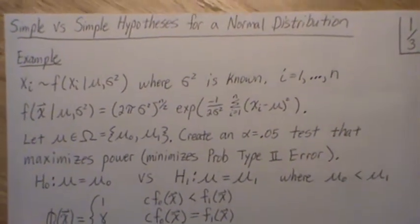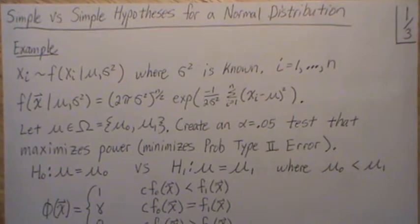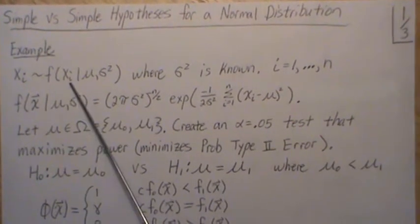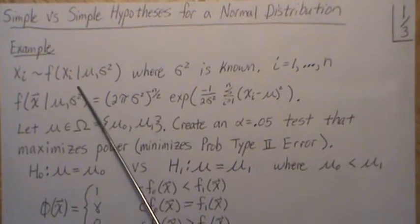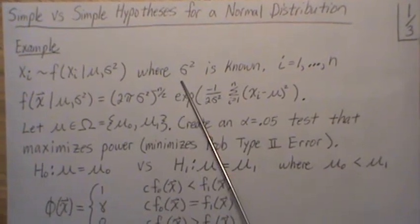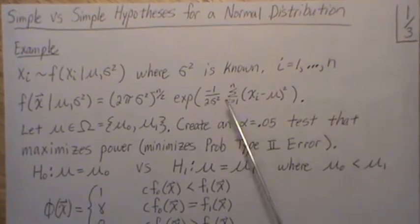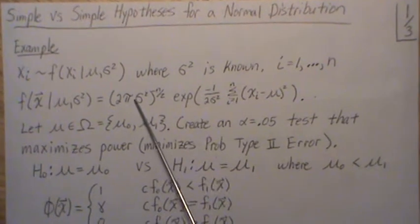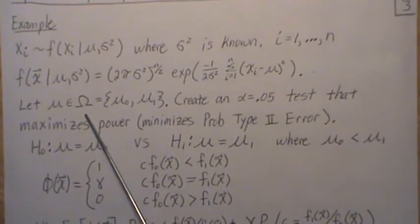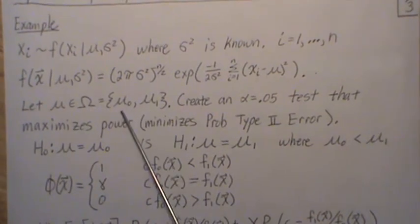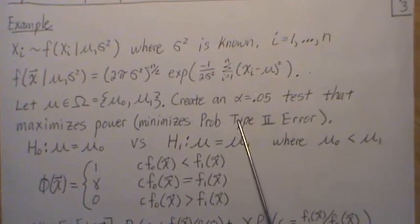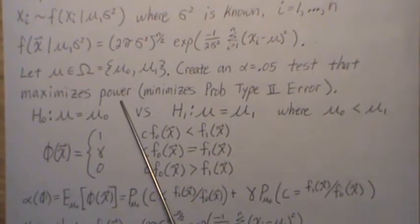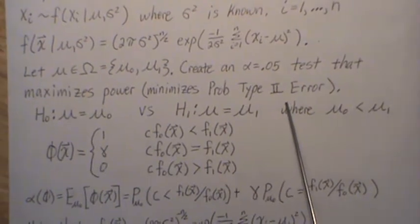This is the next video in a playlist called hypothesis testing. In this video we're going to look at simple versus simple hypotheses in the normal distribution setting. We'll let Xi be distributed as a normal distribution with known sigma squared and sample size n. The joint density is the product of those individual densities. We want to create an alpha level, 0.05 level test that maximizes power, or equivalently minimizes the probability of a type 2 error.